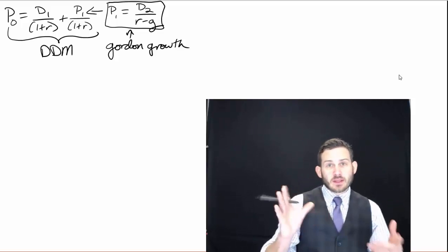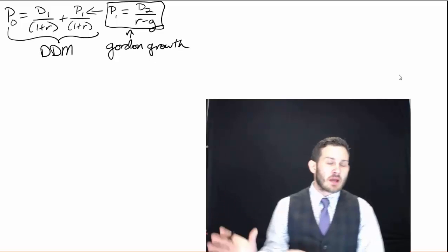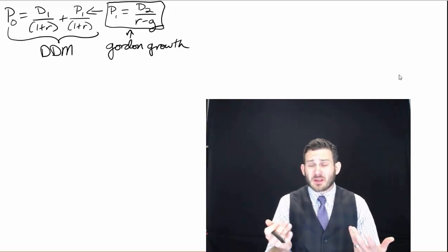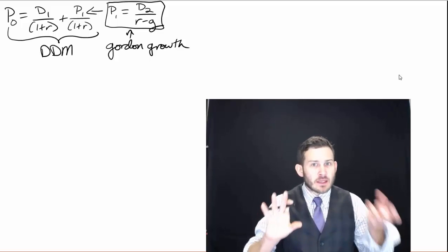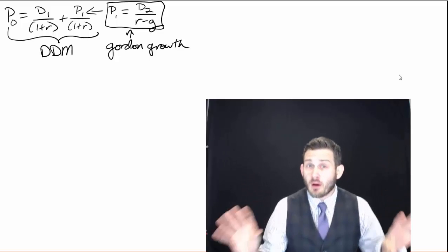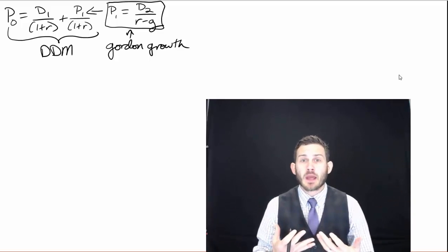What we've seen in the past is that we've looked at these two models here. We've used the discount dividend model, the Gordon growth model, and we are just basically combining them. There's not really anything new here except for the fact that we are taking these two concepts that we should already know and putting them together.